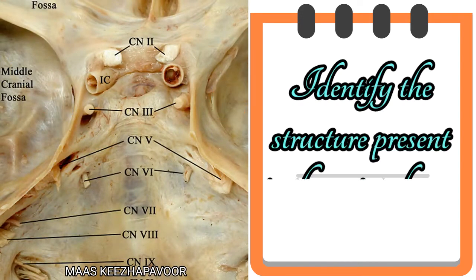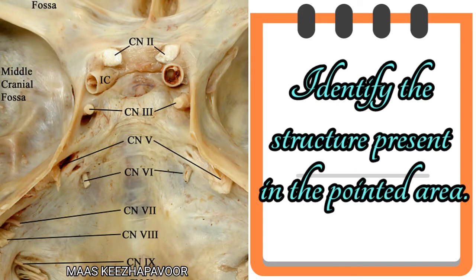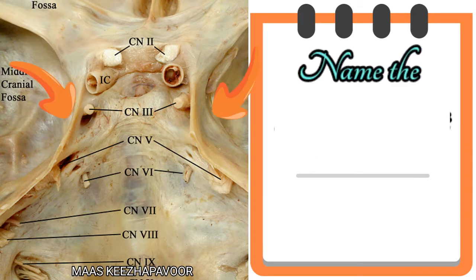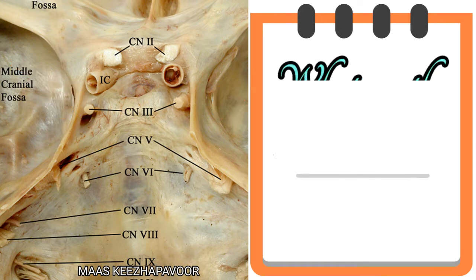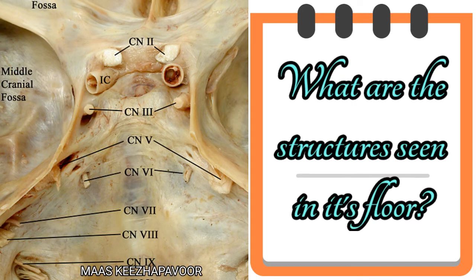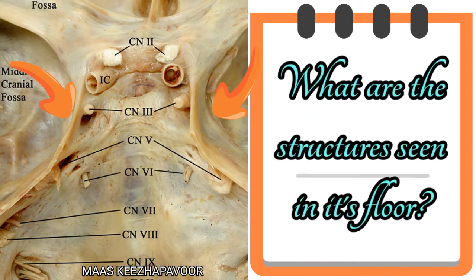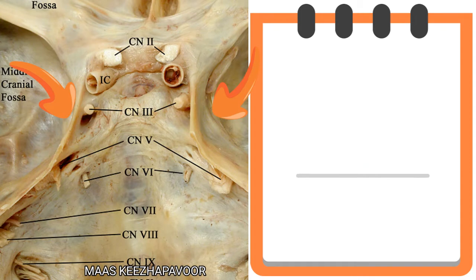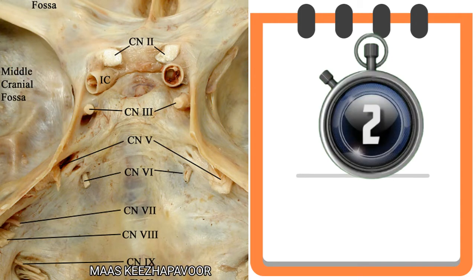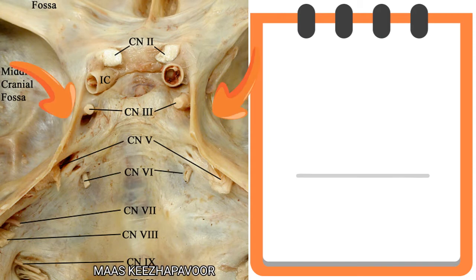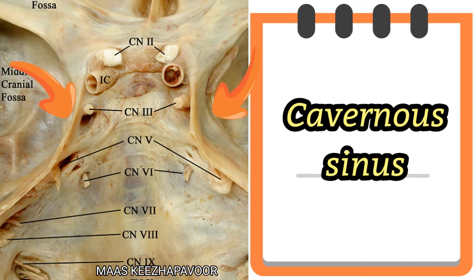Identify the structure present in the pointed area. Name the structures present in its lateral wall. What are the structures seen in its floor? Your time starts now. The structure present in the pointed area is cavernous sinus.